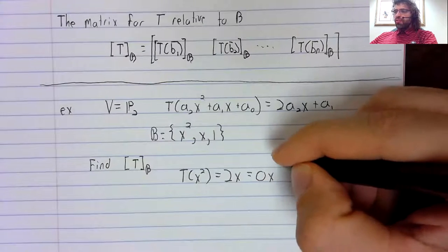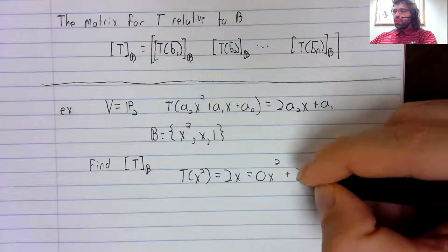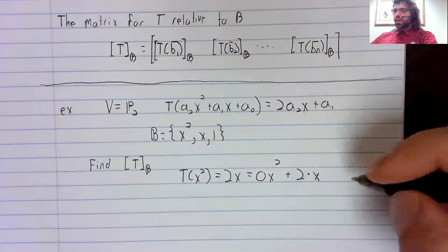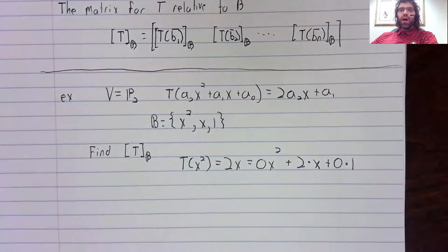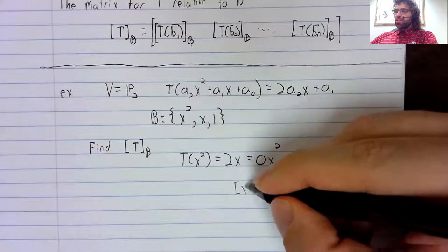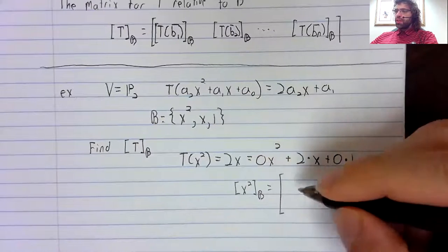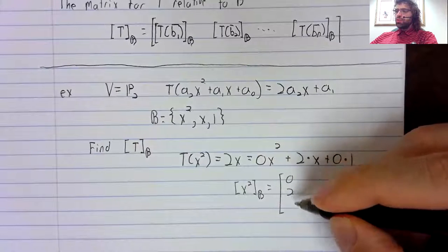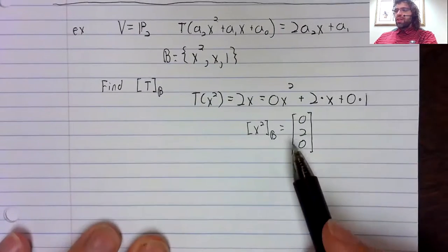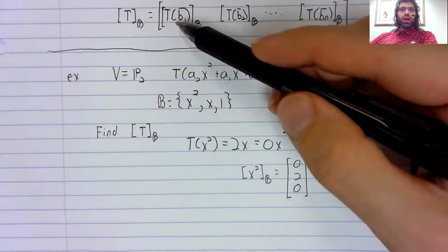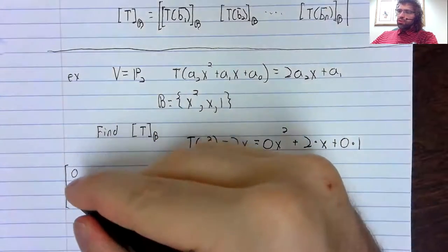Well, this is easy enough to do in our heads. Two x is zero x squared plus two times x plus zero times one. So the coordinate vector is zero, two, zero. And this is the first column of the matrix we are looking for.